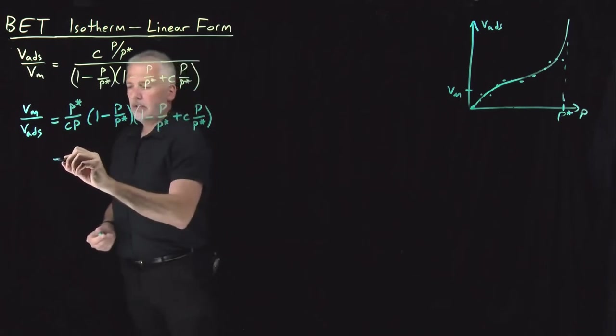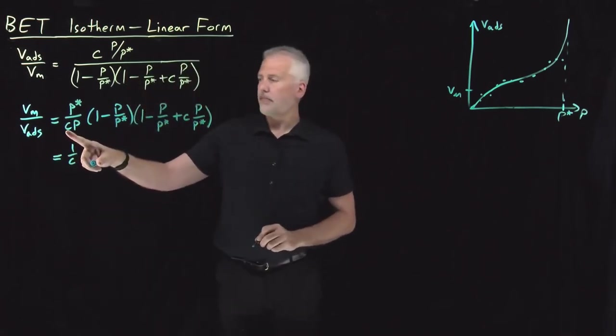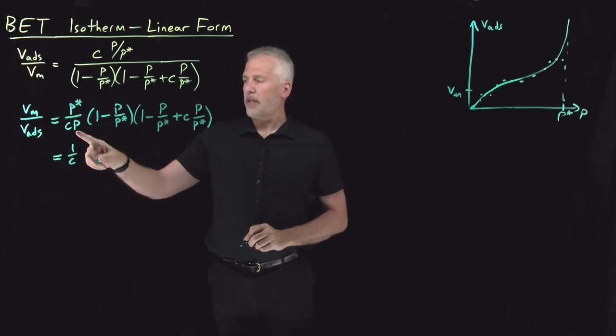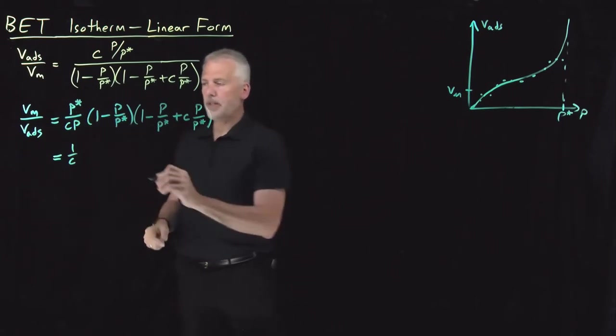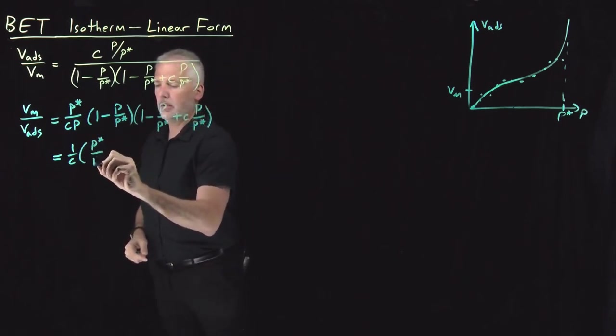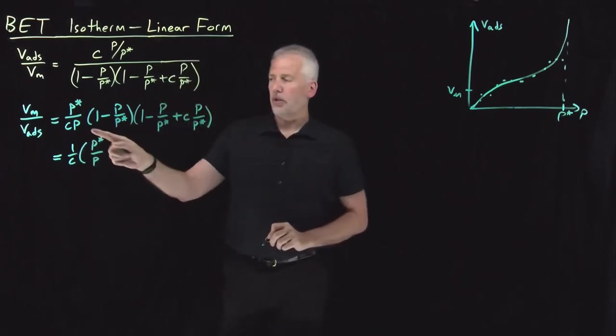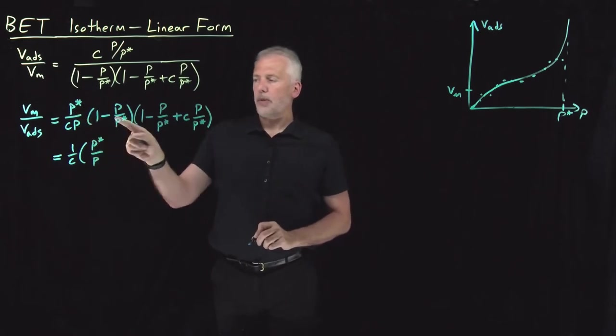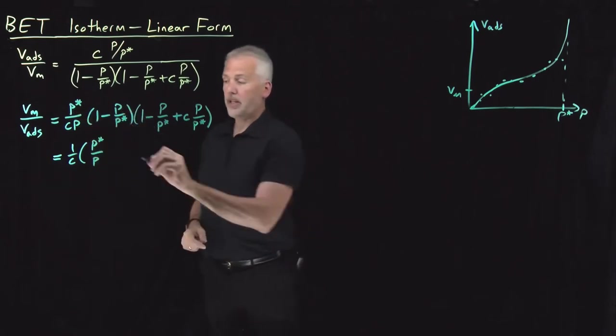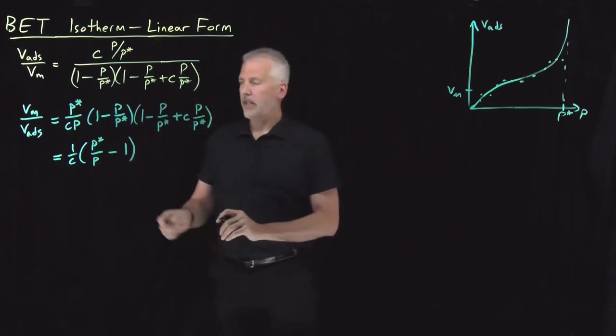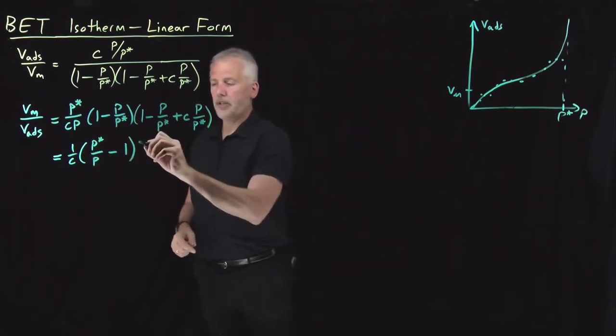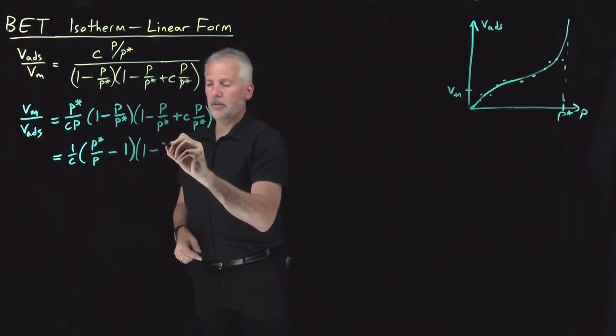And now, let's see, I'll leave the 1 over C out front. This P star over P, I'll distribute that into this first term in parentheses. So P star over P times 1 looks like P star over P. And then P star over P times P over P star, those cancel, and I'm left with just 1. And then, after I've done that multiplication, I'm going to leave the last term alone for now.